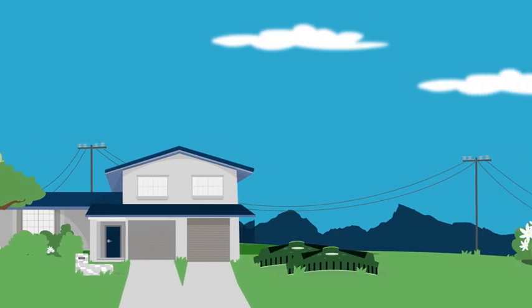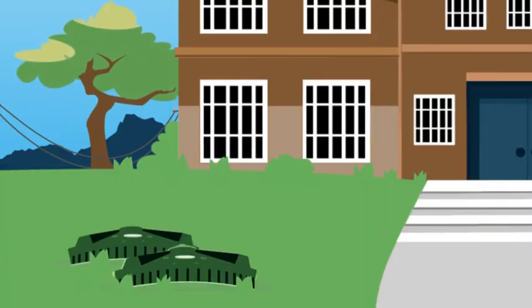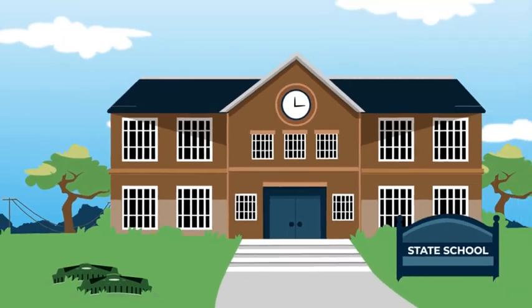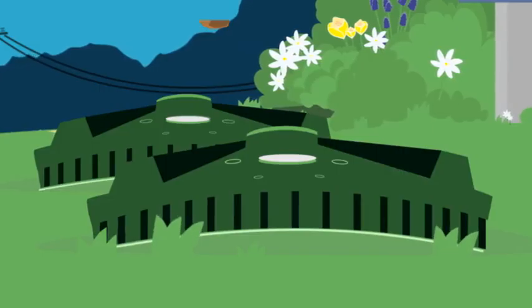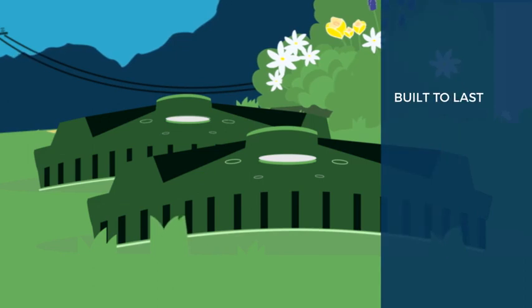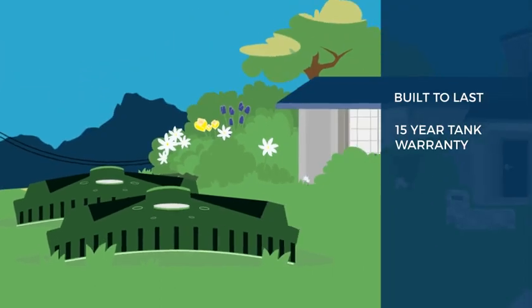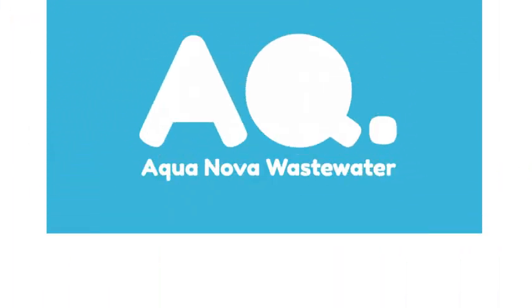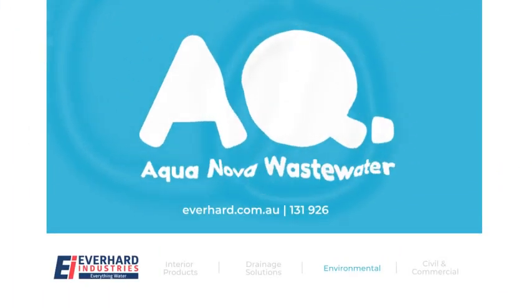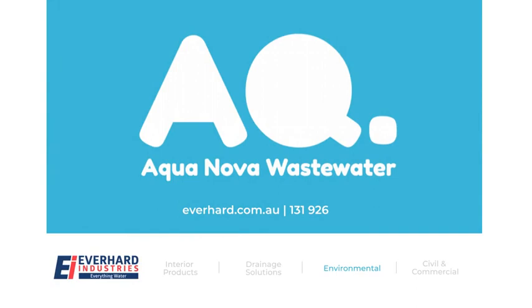The AQ systems are designed to suit a wide range of domestic and commercial applications and are built to comply with Australian standards. They're constructed from high-quality, durable materials that are built to last and come with a fully guaranteed 15-year tank and 2-year electrical warranty. For more information on our products or to find an AQ distributor near you, visit our website at everhard.com.au.